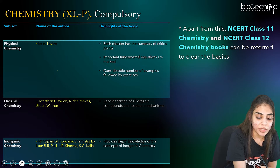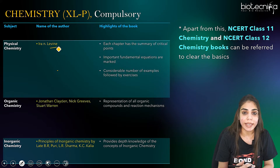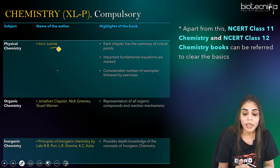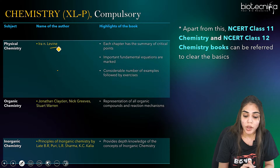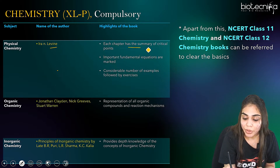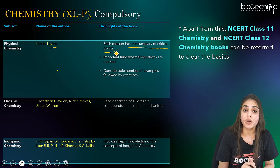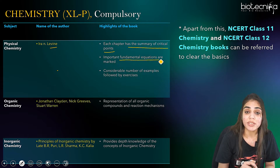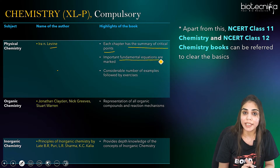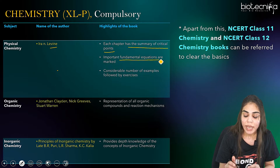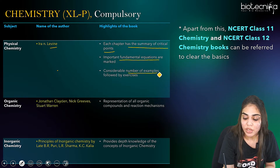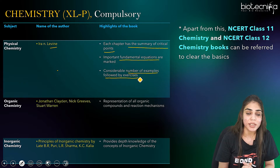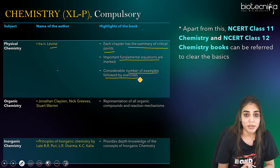For physical chemistry, you can go for the Ira N. Levine book. The benefits of studying physical chemistry from this book: each chapter has a summary of the critical points, so going through the chapter summary will be enough. It also has important fundamental equations that are highlighted, and it contains a considerable number of examples followed by exercises that you can practice.